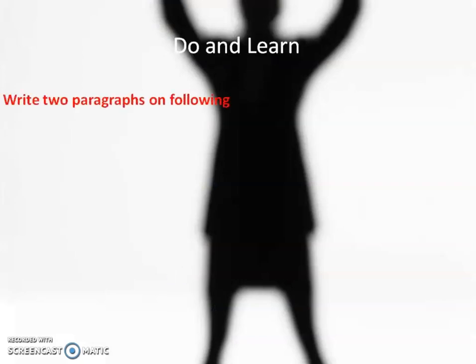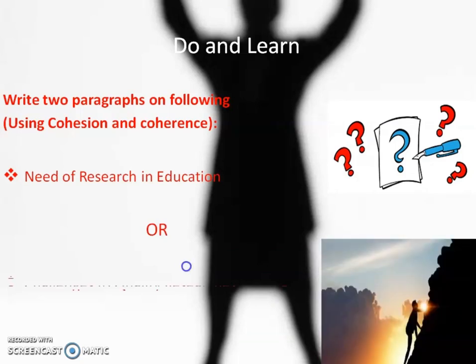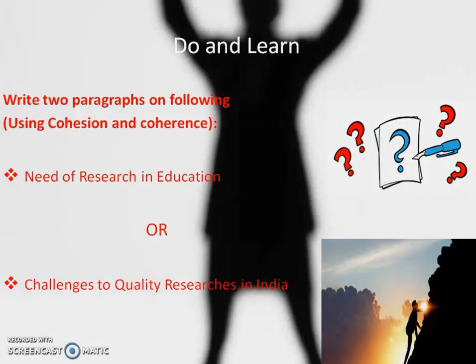Here is an activity for you: write two paragraphs on one of the following topics using cohesion and coherence. The first option is 'Need of research and education,' or you can opt for 'Challenges to quality research in India.' Thank you so much.